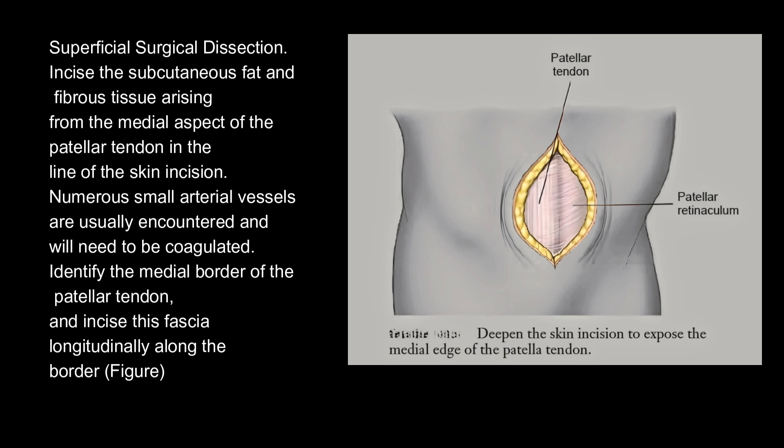Superficial surgical dissection: incise the subcutaneous fat and fibrous tissue arising from the medial aspect of the patella tendon in the line of the skin incision. Numerous small arterial vessels are usually encountered and will need to be coagulated. Identify the medial border of the patella tendon and incise this fascia longitudinally along the border.